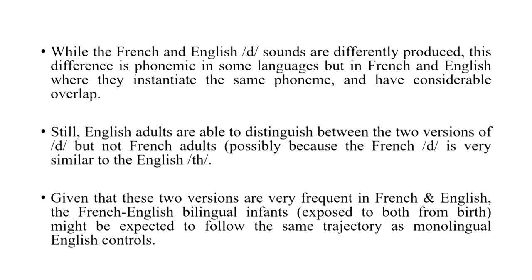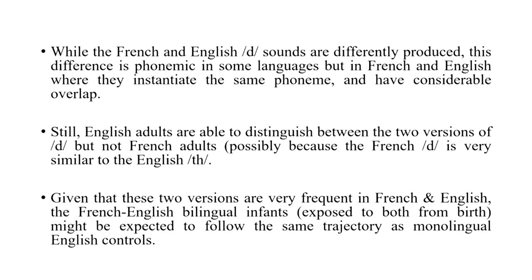In French, 'the' is produced with the tongue just at the back of the teeth, whereas the English 'the' is produced with the tongue at the alveolar ridge. While the French and English 'the' sounds are differently produced, this difference can be phonemic in some languages, but interestingly in English these two sounds instantiate the same phonemic category. Still, English adults are able to distinguish between the French and English 'the,' whereas French adults are not. Given that these two versions are very frequent in French and English respectively, it could be expected that French-English bilingual infants might follow the same strategy as adults.